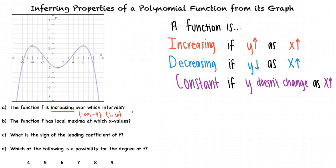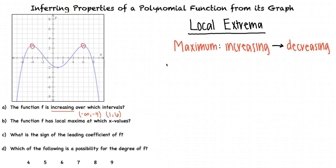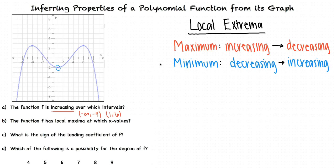Let's move on to part B, in which we find the local maxima. Local extrema occur where the graph changes from increasing to decreasing or from decreasing to increasing. A function has a local maximum at an x value where the graph shifts from increasing to decreasing, and a local minimum where the graph shifts from decreasing to increasing. Looking at our graph, both negative 4 and 6 fit our criteria, so our answer is x equals negative 4 and 6.